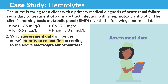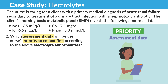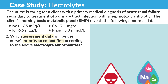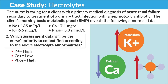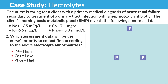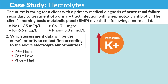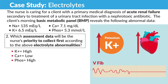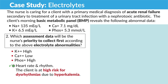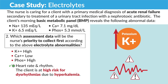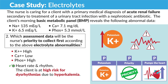Look at the keywords here — the assessment data that is priority to collect first. Any priority question, always think: what kills the client the fastest? We have potassium that's high, calcium that's low, and phosphate that is high. Think the three P's of potassium — potassium is priority since it pumps the heart and muscles. With high potassium, we have high pumps, a huge risk for cardiac dysrhythmias like V-fib and even cardiac arrest. So the answer is heart rate and rhythm. The client is at high risk for dysrhythmias due to hyperkalemia — that high potassium.